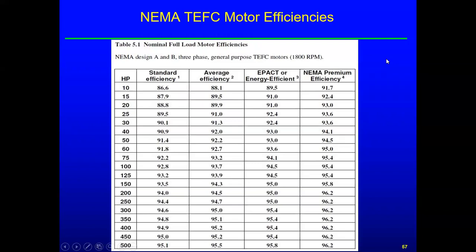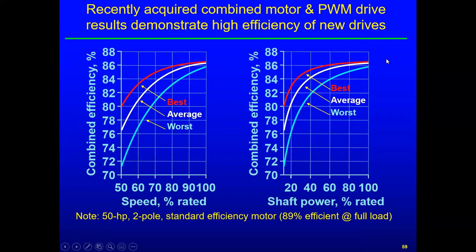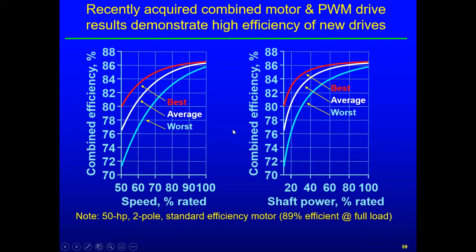Large motors today — premium to standard efficiency — run 94 to 96% efficiency. Replacing an oversized motor purely for efficiency reasons is probably not worth it since efficiency doesn't drop much with reduced load. Don Casada tested a 50-horsepower two-pole (3600 RPM synchronous) standard-efficiency motor at 89% full-load efficiency. The combined motor-VFD efficiency data for three different manufacturer drives shows that as you ramp back speed, combined efficiency falls somewhat, but this doesn't mean VFDs are a bad idea — you just need to be aware it's happening in the background.